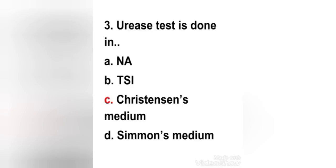Third question: the urease test is done in which medium? Options: nutrient agar, triple sugar iron agar, Christensen's medium, Simmons medium. The right answer is option C — Christensen's medium. The urease test identifies organisms capable of hydrolyzing urea to produce ammonia and carbon dioxide.